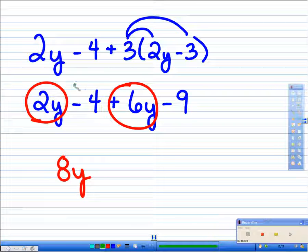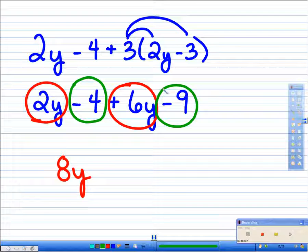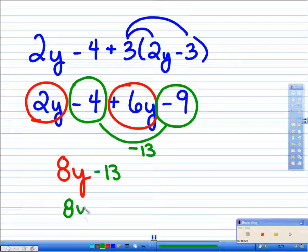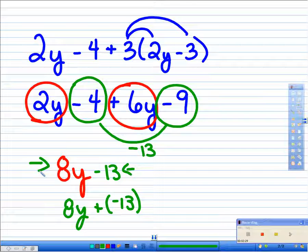Now let's take a different thing. We have the negative 4 here and the negative 9, or minus 4 and minus 9. If we combine those, what we get is negative 13. So we can put down in this problem minus 13, or 8y plus negative 13. This right here is the simpler version of that.